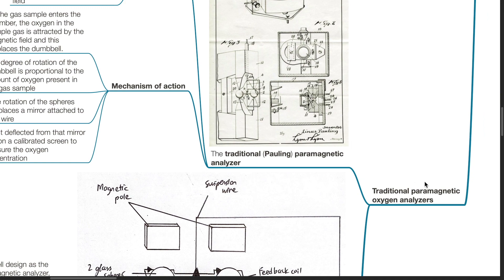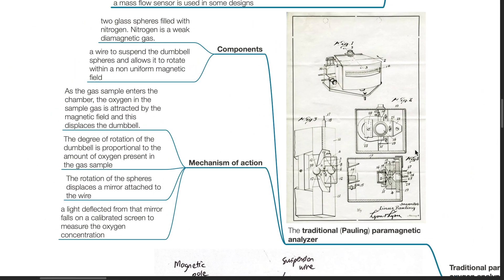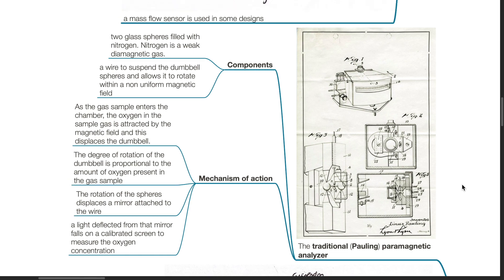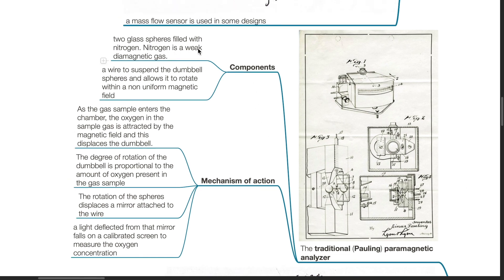The traditional Pauling paramagnetic analyzer has components including two glass spheres filled with nitrogen — a weak diamagnetic gas — suspended by a wire allowing them to rotate as a dumbbell within a non-uniform magnetic field. As the gas sample enters the chamber, oxygen in the sample is attracted by the magnetic field, displacing the dumbbell. The degree of rotation is proportional to the amount of oxygen present. The rotation displaces a mirror attached to the wire, and a light deflected from that mirror falls on a calibrated screen to measure the oxygen concentration.